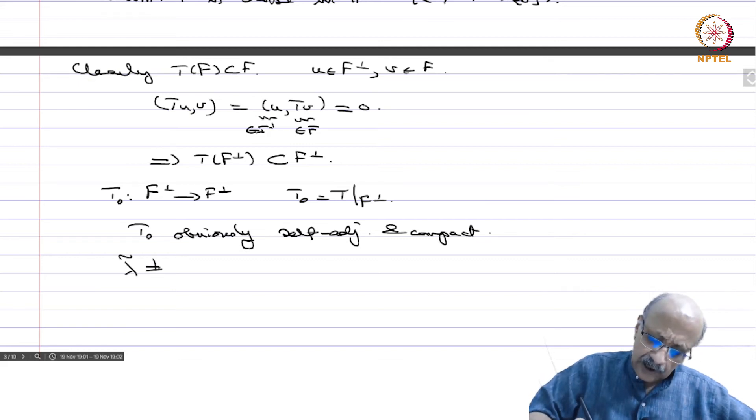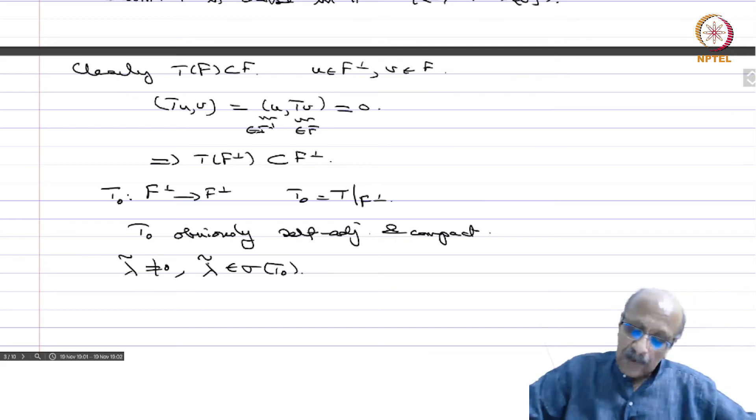Let lambda tilde not equal to 0, lambda tilde belong to sigma of T_0. It is a self adjoint and compact operator, F perp is closed, so it is a Hilbert space in its own right and therefore it will have a spectrum. So assume it has a non-zero element in the spectrum, then implies it is an eigenvalue because it is compact.